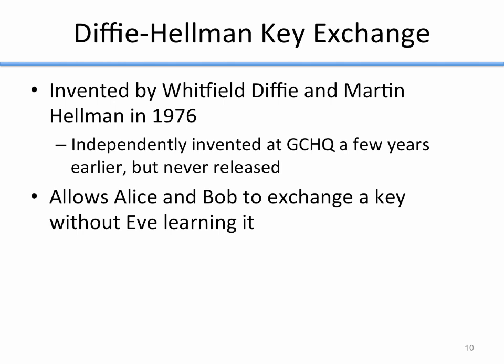The Diffie-Hellman key exchange was invented by Whitfield Diffie and Martin Hellman in 1976. Ironically, it was independently invented at GCHQ — which is kind of the British government spy agency — a few years earlier, but they never released it because for them it was a national secret. Some of their mathematicians invented this same protocol but never released it, and then a few years later, independently, Diffie and Hellman also discovered it and they did release it. What the Diffie-Hellman key exchange allows is for Alice and Bob to exchange a key without Eve learning it.